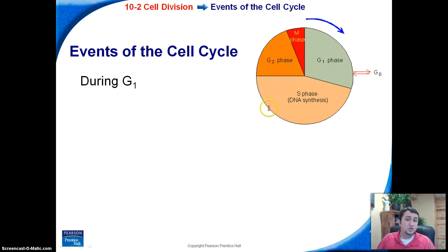What happens during G1? Well, we're going to increase in size. So think about G1 happens right after the M phase where the cell has divided. So G1, we're going to get the cell to start to grow up a little bit, starting to become an adult cell, quote unquote.